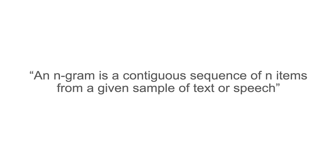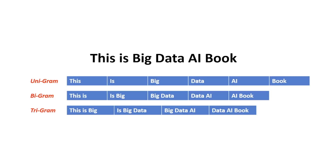One task that's critical for information retrieval is splitting paragraphs into their respective Ngrams. Wikipedia defines an Ngram as a contiguous sequence of N items from a given sample of text or speech. You can see here we start off with the sentence 'this is big data AI book,' and the bigram takes it and turns it into: 'this is,' 'is big,' 'big data,' 'data AI,' 'AI book' — splitting the words into pairs. That's what's called a bigram.